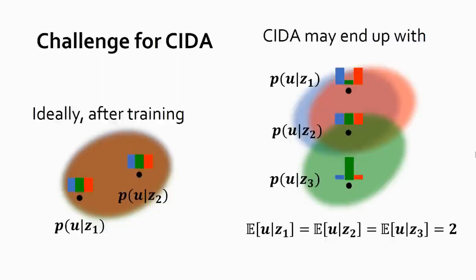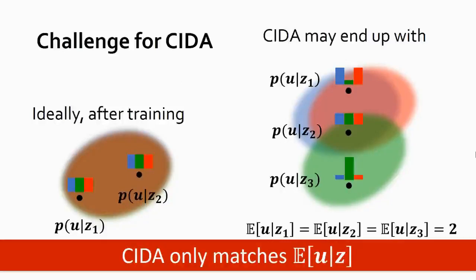However, with some theoretical analysis, we find that the vanilla version of CIDA is only guaranteed to match the expectation of the domain, but not the whole distribution. For example, it may converge to the case shown on the right, where the embeddings share the same expectation of the domain index, but actually have different distributions. The intuition is that since the discriminator only predicts one scalar to regress the domain index, it cannot represent the whole distribution of the domain index.